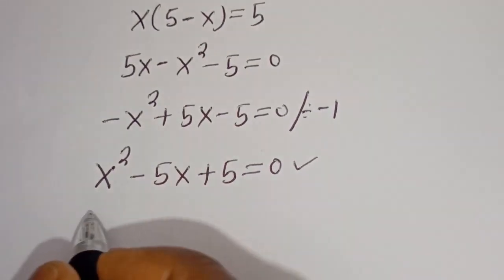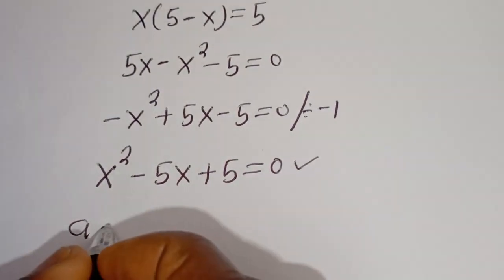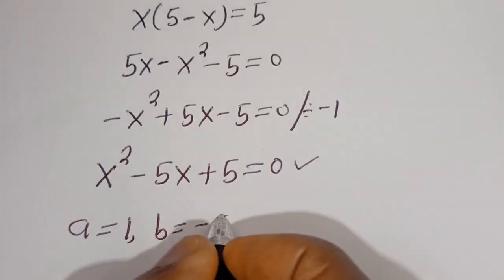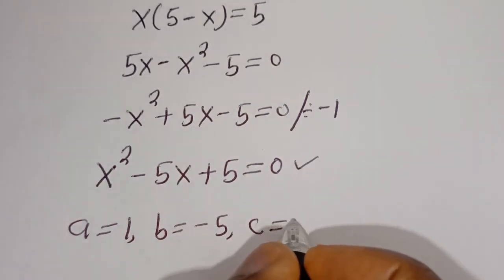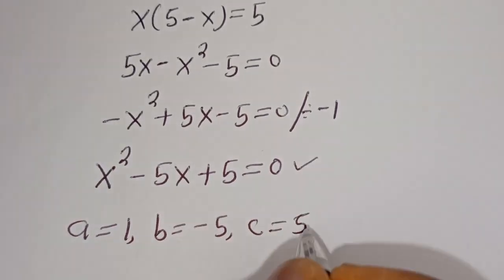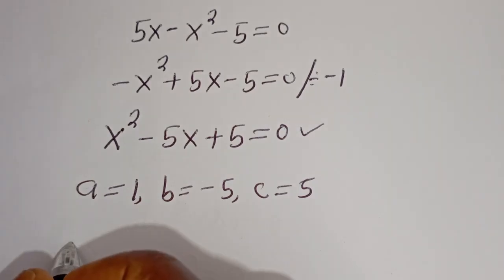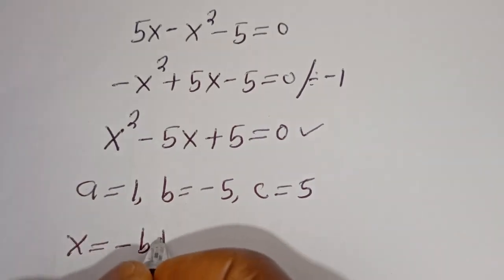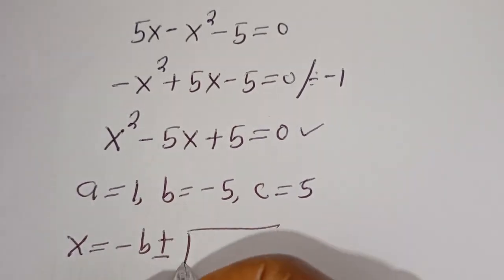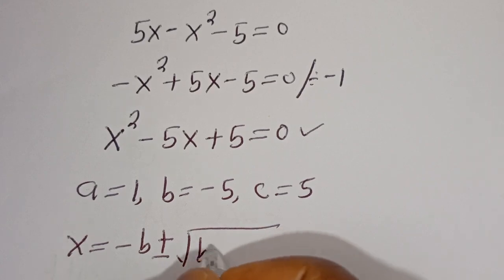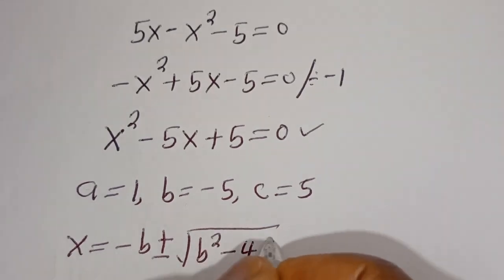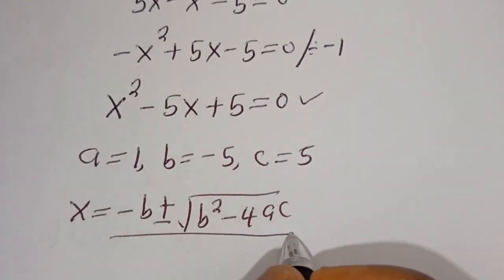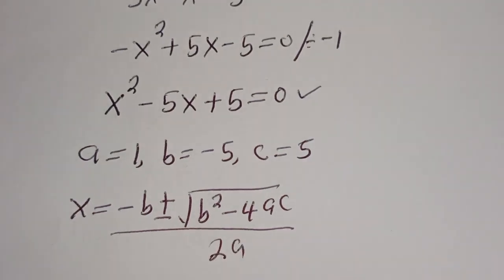From here, we can use the quadratic general formula. We identify a equals 1, b equals minus 5, and c equals 5.